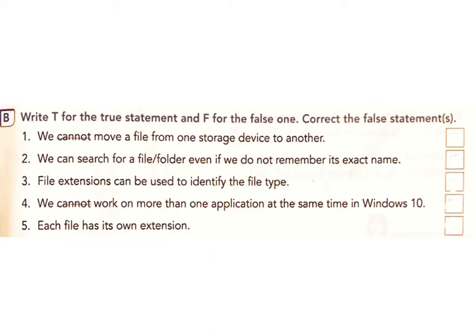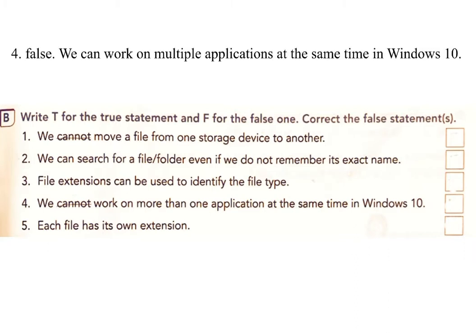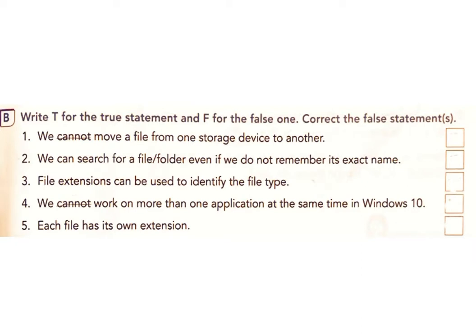Question 2: We can search for a file or folder even if we do not remember its exact name. Answer: True. Question 3: File extensions can be used to identify the file type. Answer: True. Question 4: We cannot work on more than one application at the same time in Windows 10. Answer: False. We can work on multiple applications at the same time in Windows 10.